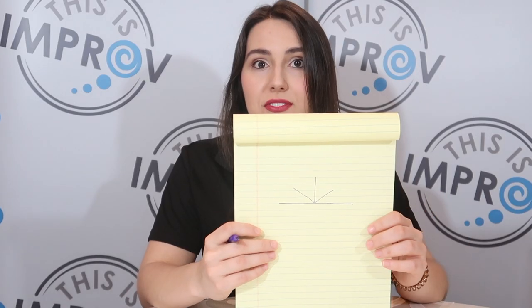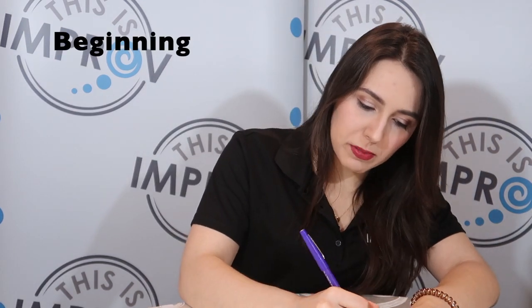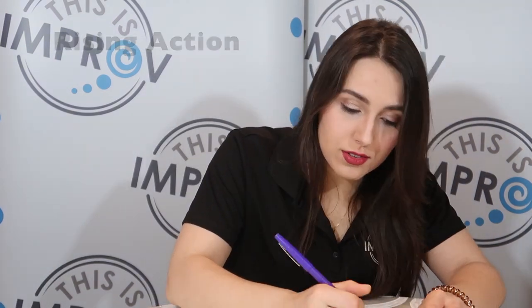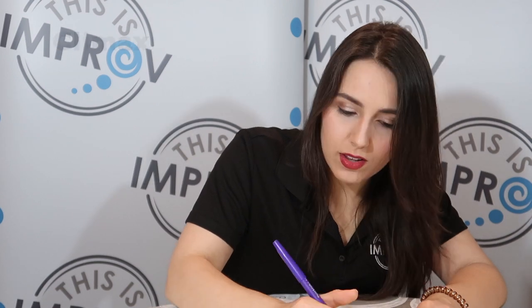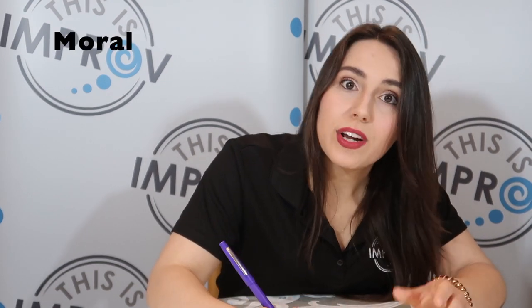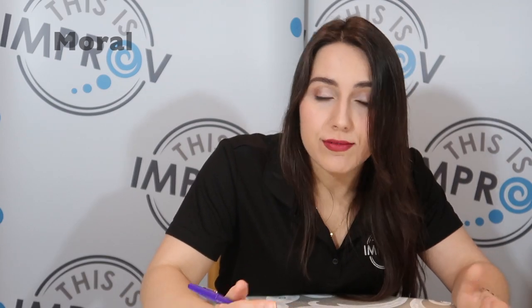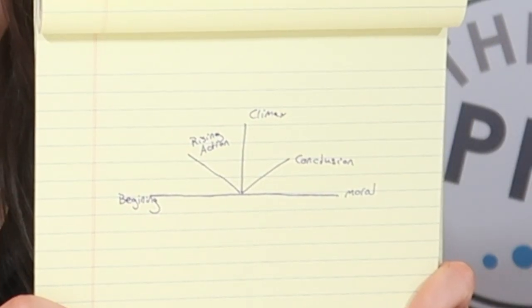What do we have? We have our beginning, your rising action, your climax, your conclusion. And what I like to include: the moral. So there's your Plot Arch.